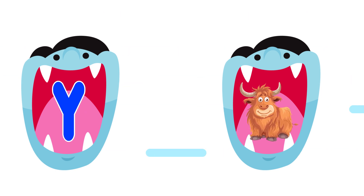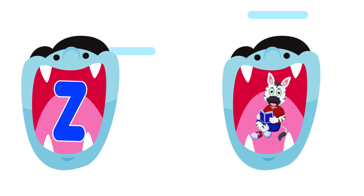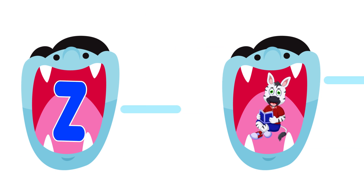Y is for yak. Y, Y, yak. Y, Y, yak. Y, yak. Z is for zebra. Z, Z, zebra. Z, Z, zebra. Z, zebra.